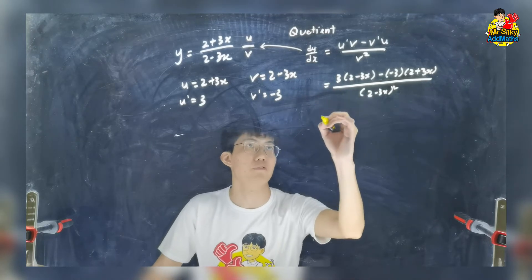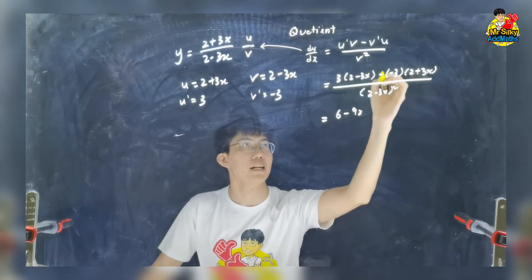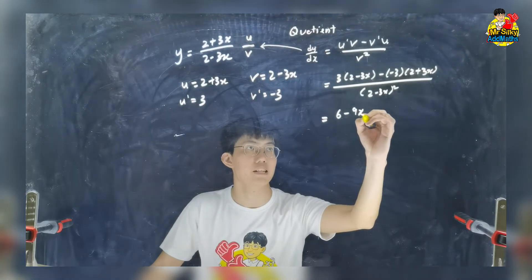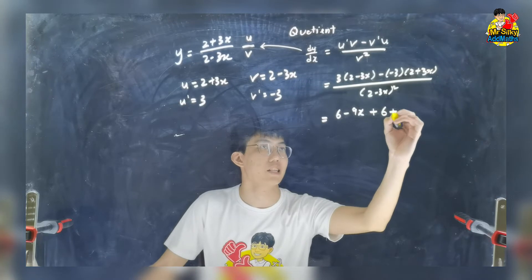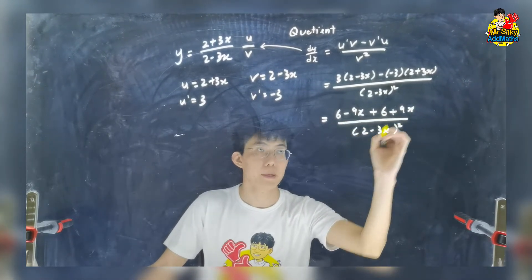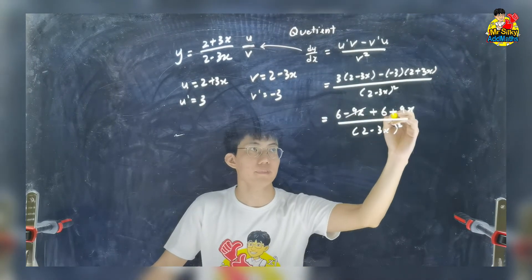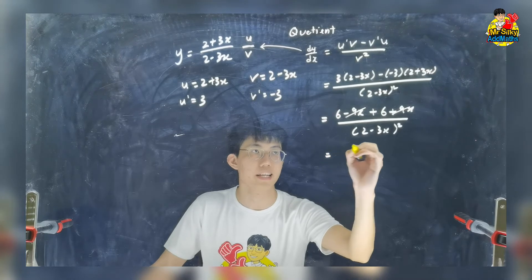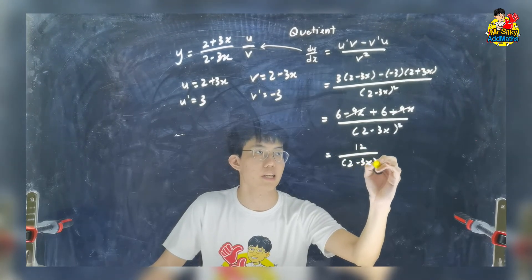So what I do next is to simplify. 3 times 2 is 6 minus 9x. Minus minus 3 become plus actually. So 3 times 2 getting 6, 3 times 3x getting plus 9x over 2 minus 3x square. Minus 9 plus 9 is gone. 6 plus 6 you are getting 12 here and over 2 minus 3x and we square it.